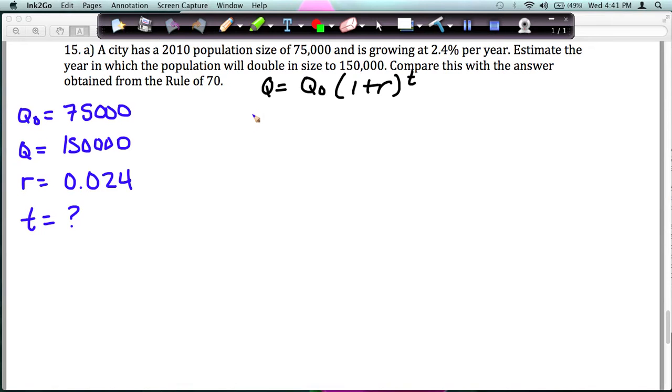Let me show you how to do this. Let's go back over here and plug in our values. So I have 150,000 equals 75,000 times (1 plus 0.024) raised to the T power.